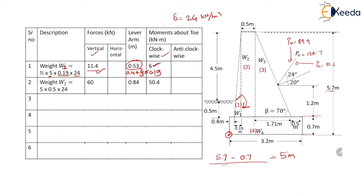Weight W2 is the weight of the second rectangular area: base into height into density, which is 0.5 into 5 into 24, equal to 60 kN acting vertically downward. The lever arm is the distance of CG from toe: 0.4 plus 0.19 plus half of 0.5, equal to 0.84. The clockwise moment about toe is 60 into 0.84, equal to 50.4 kN·m.